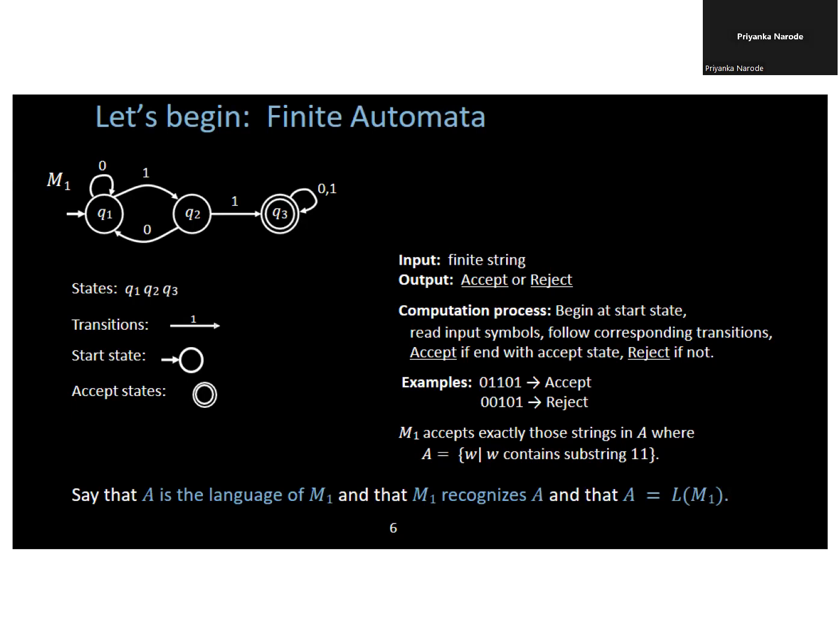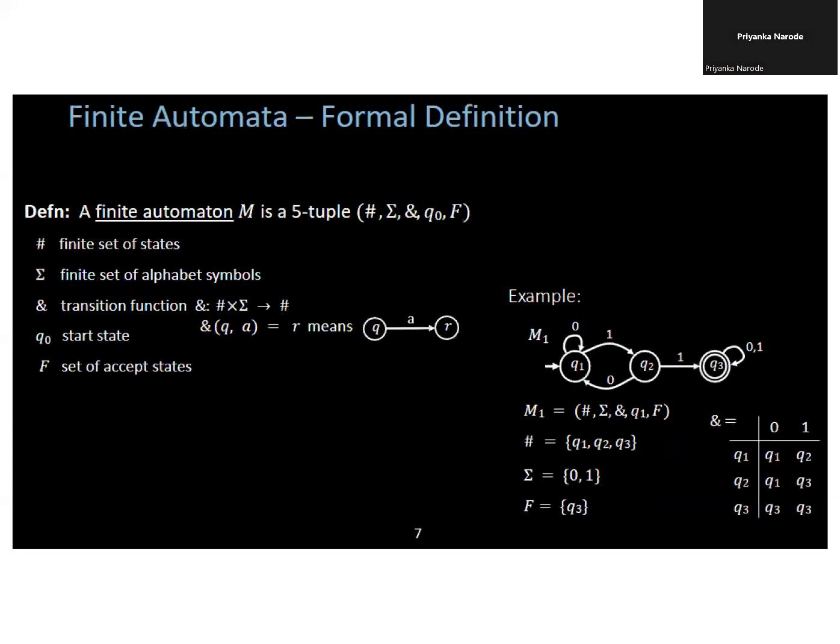I am explaining the definition of finite automata. The finite automata is the simplest machine to recognize patterns. It is a base to characterize a regular language. There are five tuples. The five tuples include: finite set of states shown as capital Q or hashtag.